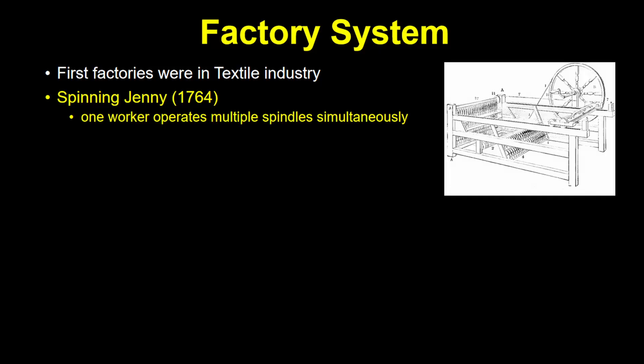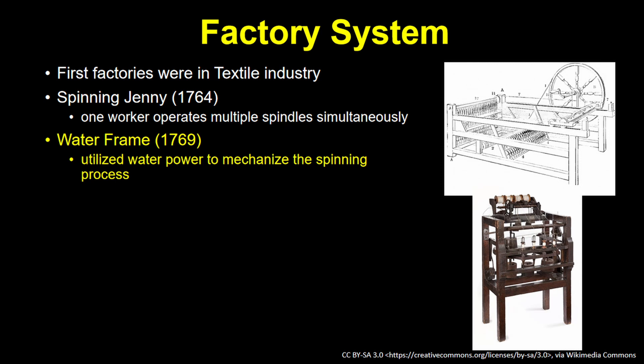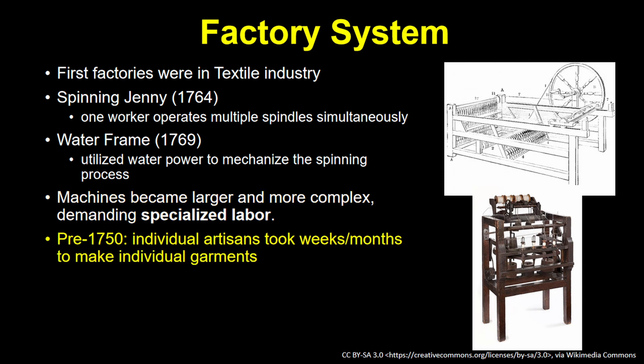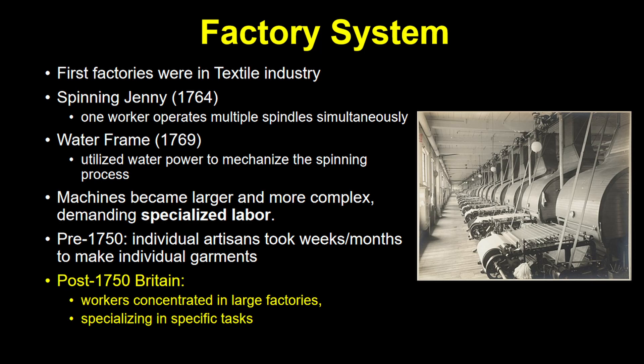The first factories in Britain made textiles. Innovations like the spinning jenny and water frame meant that the weaving and spinning of cotton no longer needed to be done individually — they were now mechanized and could weave and spin multiple garments at once. These machines became increasingly large and complex and required the work of specialized labor. In previous eras, it might take one person weeks or longer to make a single piece of clothing, having to perform the whole process one step at a time. Now workers were concentrated in ever larger factories, each person specializing on a single task. This is another one of those epic changes in world history.